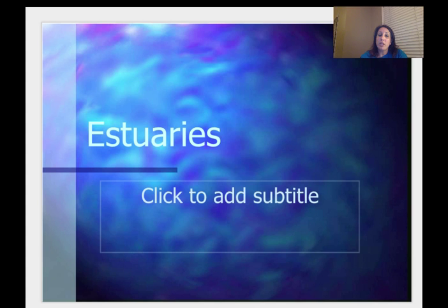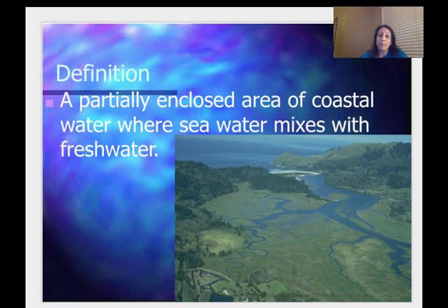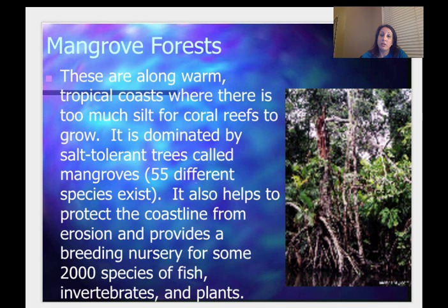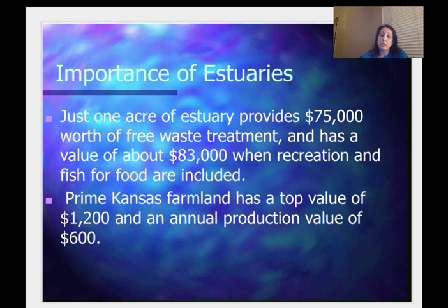We talked about estuaries — it's where coastal water mixes with fresh water. Your examples are salt marshes and mangroves. The case study we're going to talk about now is the Everglades.